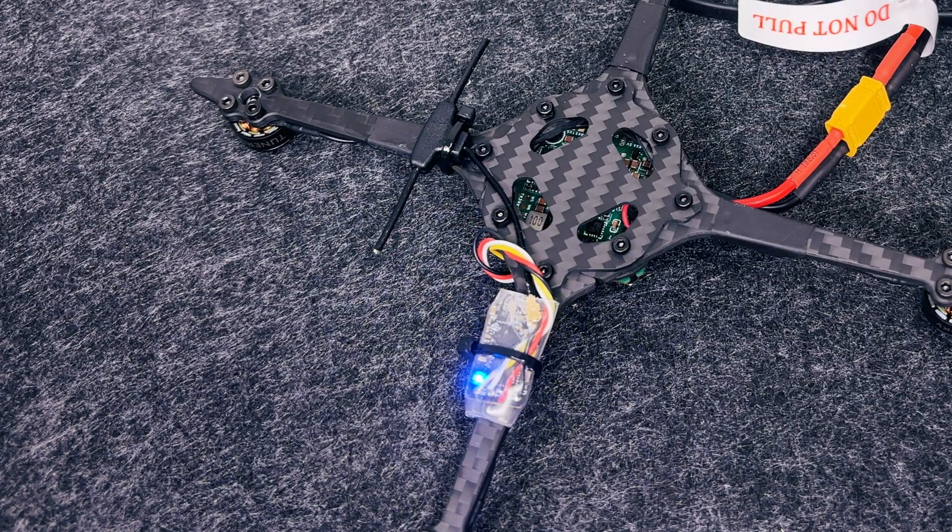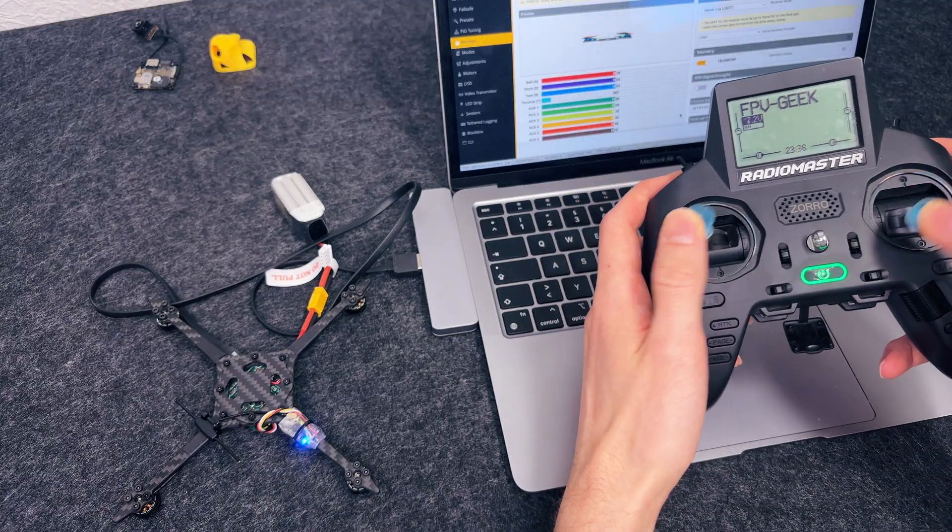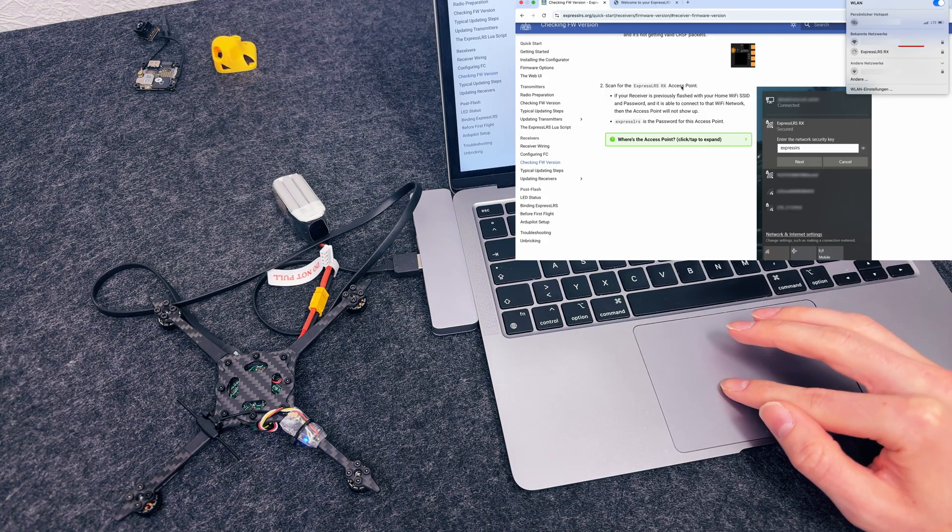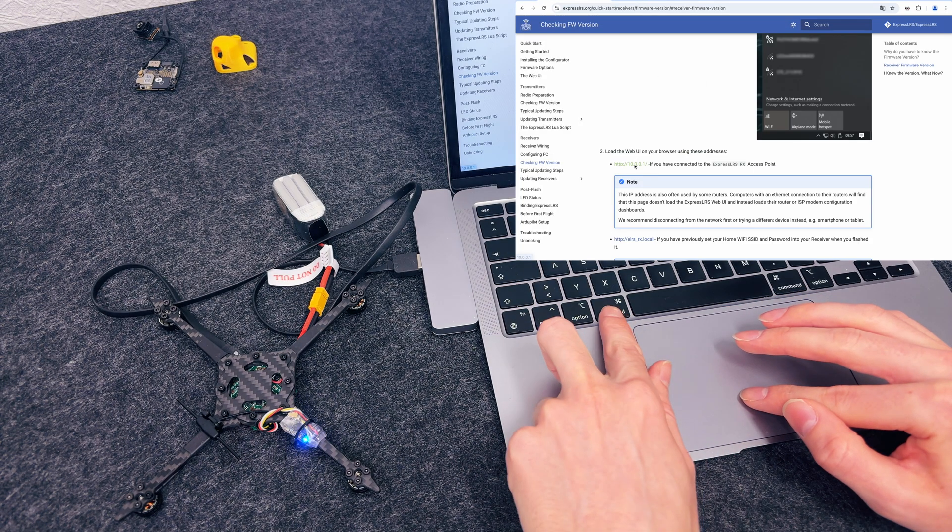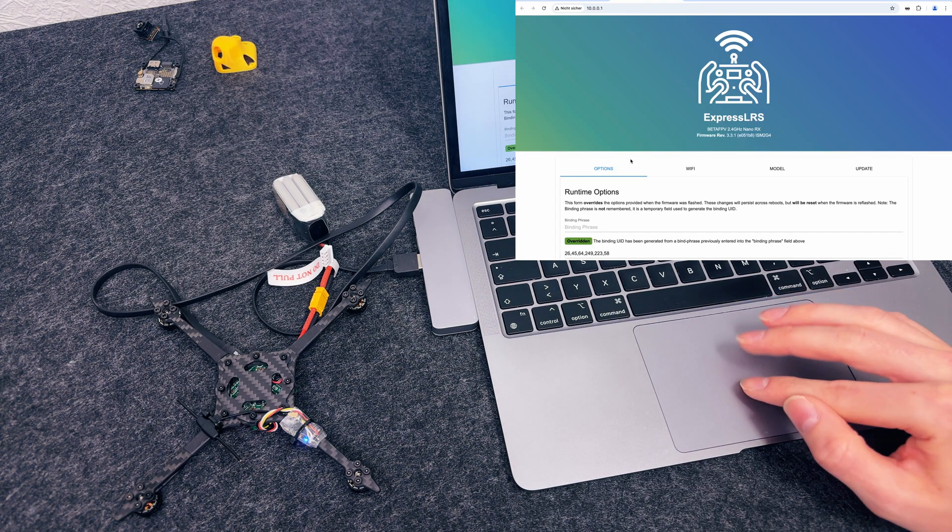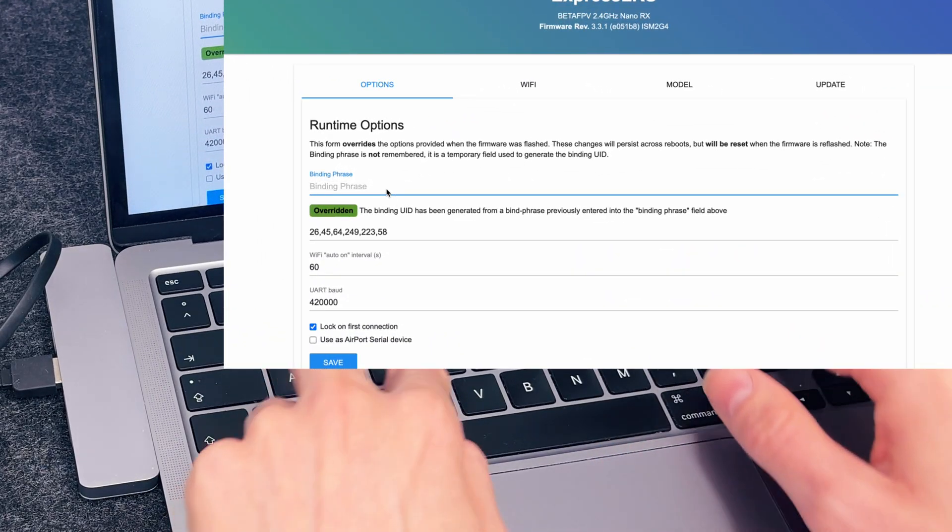First up, ELRS setup. It's actually pretty painless if you're using the stock firmware. Just power up the receiver, wait for the rapid blinking, hop onto its Wi-Fi, and enter your binding phrase. Done. Simple. No flashing. No headaches.